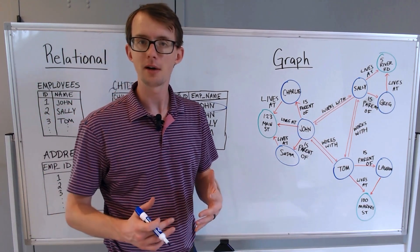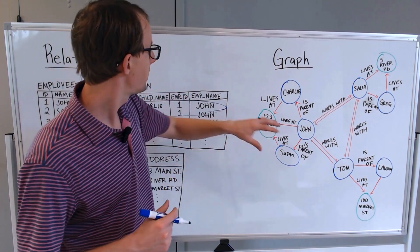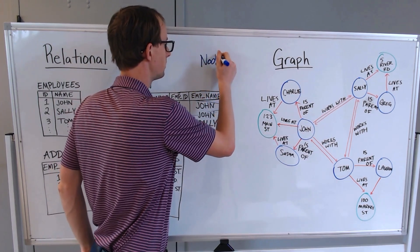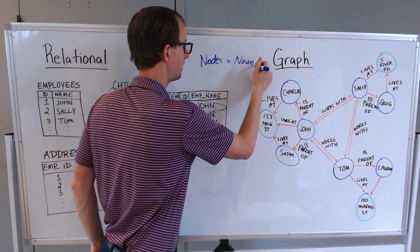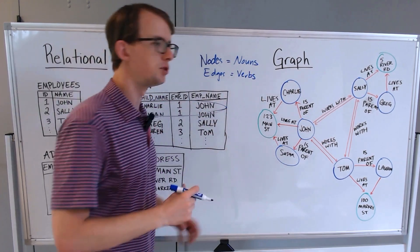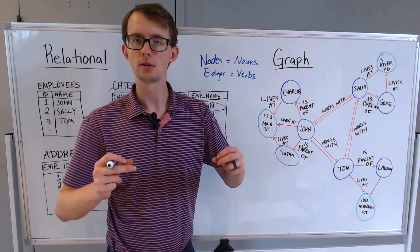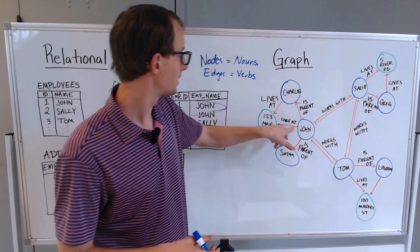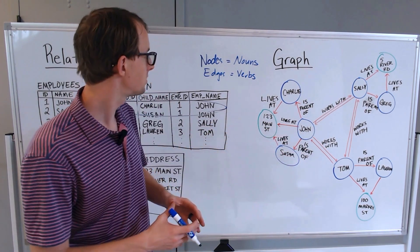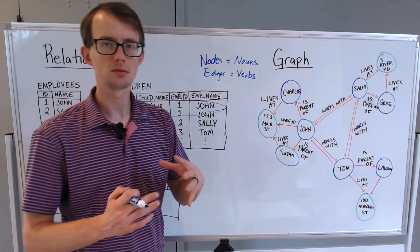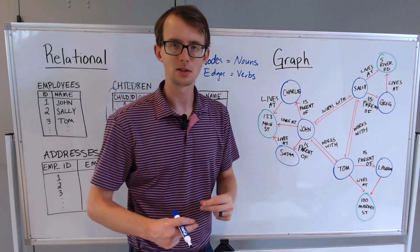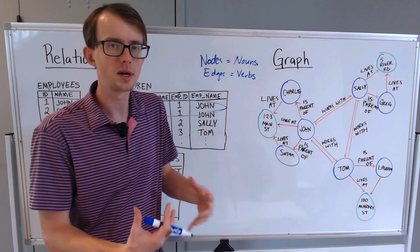One way that I like to remember how a graph is structured is that it's similar to a sentence. Nodes are nouns, and edges are equivalent to verbs. Just like a sentence, nodes are connected to one another through a verb. For example, John lives at 123 Main Street, or John is the parent of Susan. When you're trying to develop a graph or translate this data over to this type of data, your nodes are going to be your nouns and your edges are going to be verbs to describe the way that those are related.